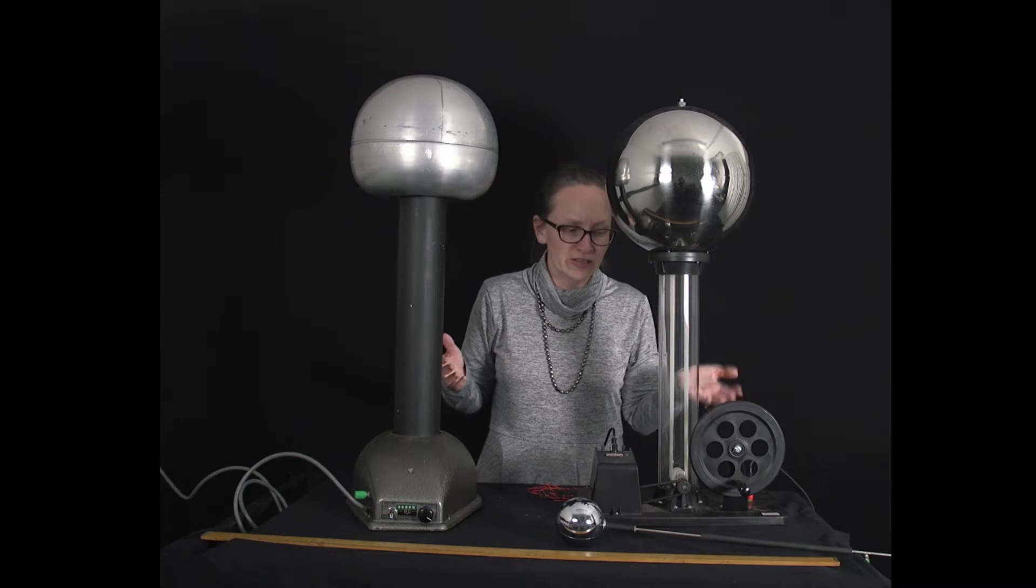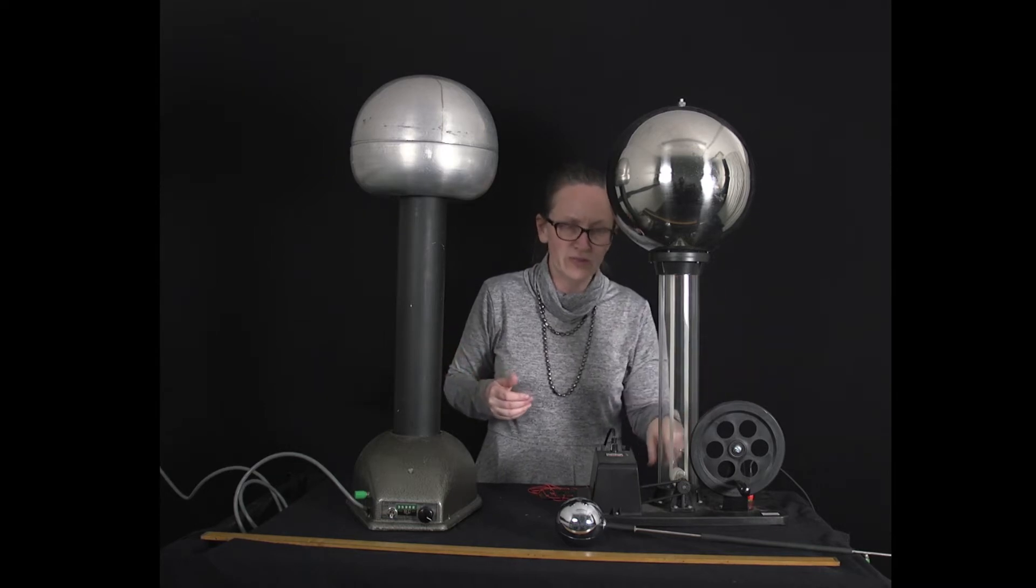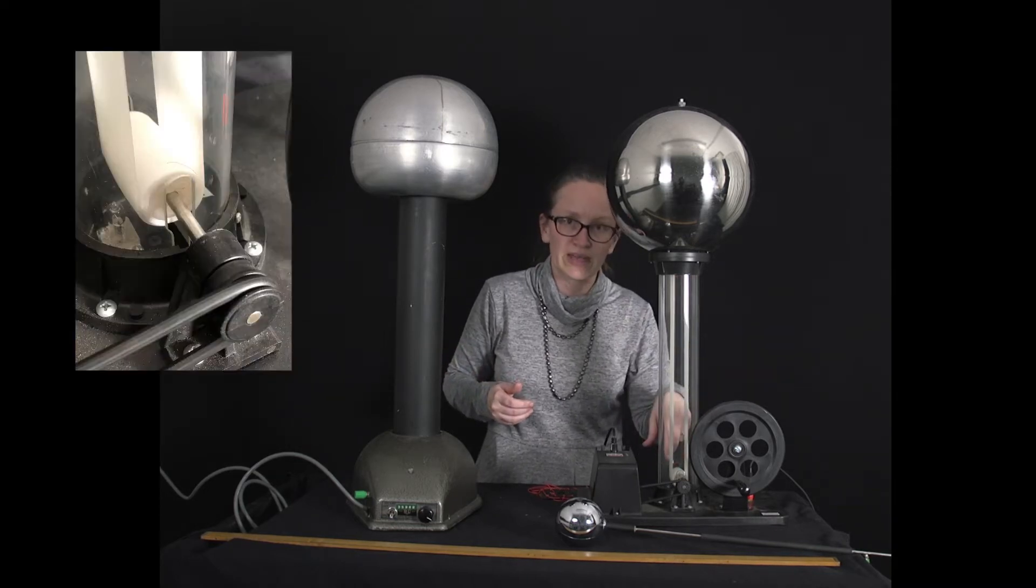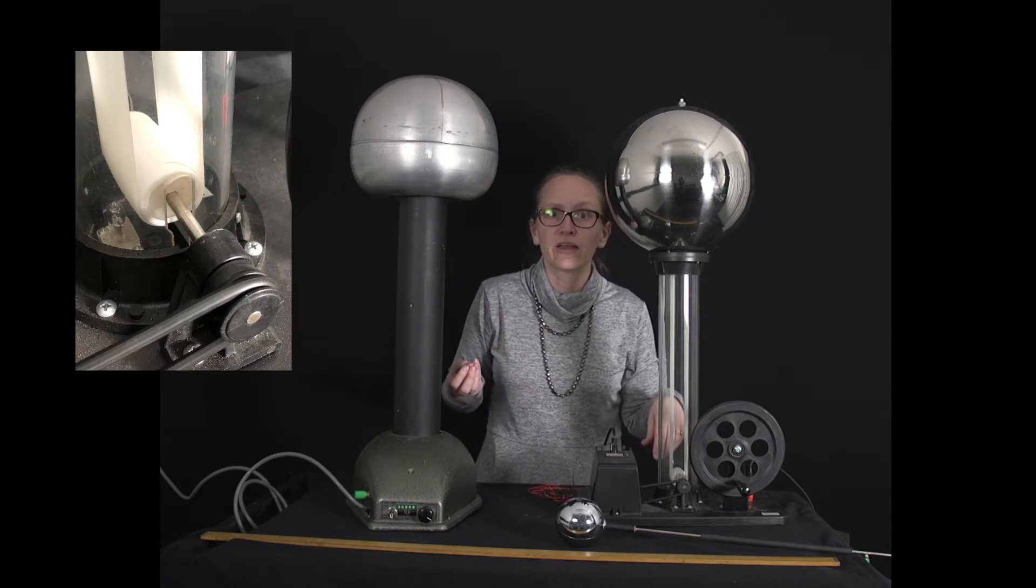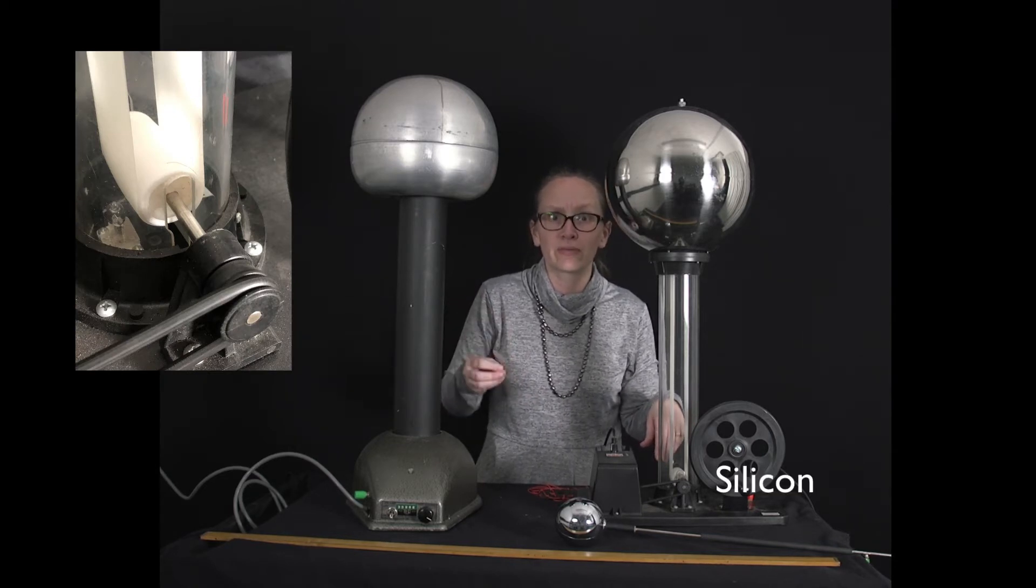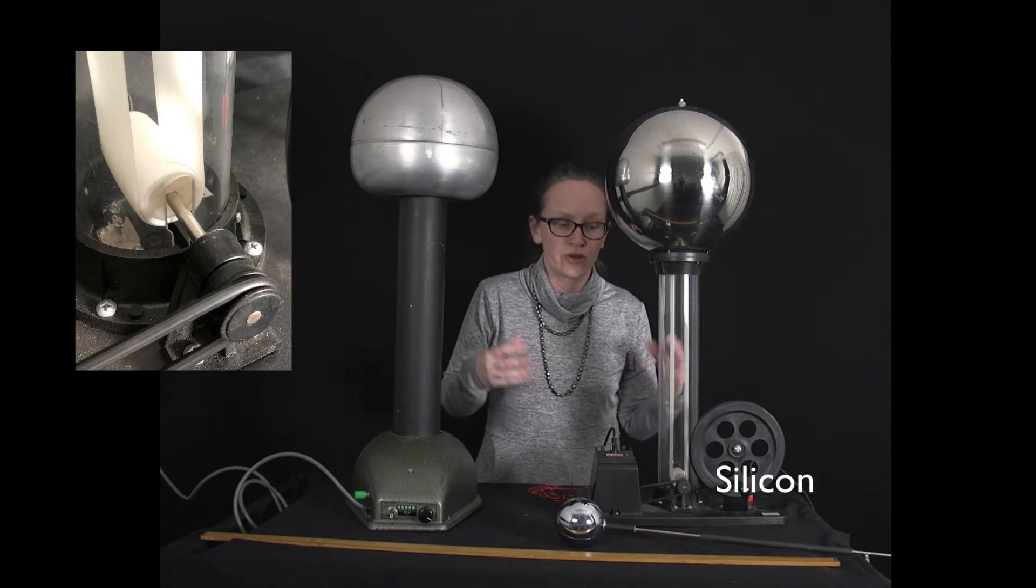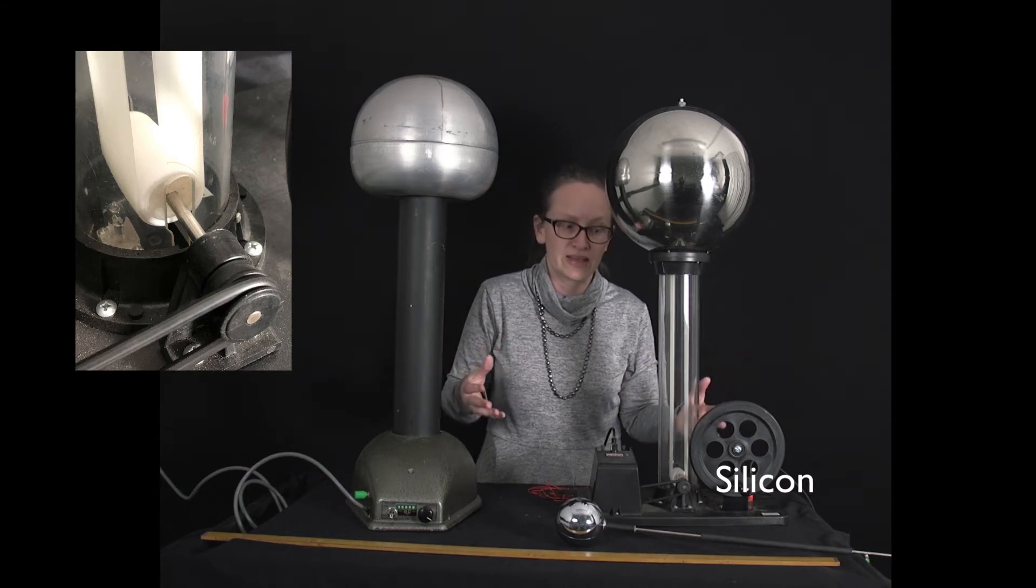Van de Graaff generators always have two rollers. We've got a roller down the bottom here, this is made of something such as silicon which is near the bottom of the triboelectric series and so tends to become negative.